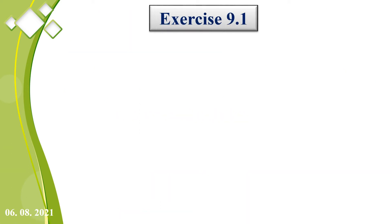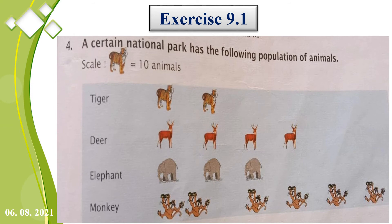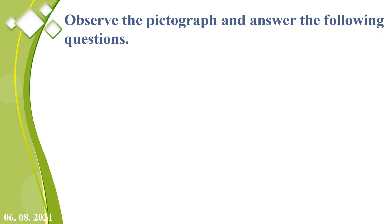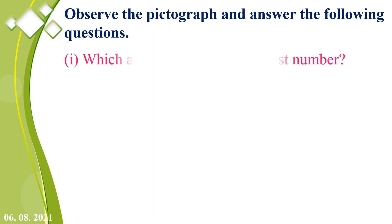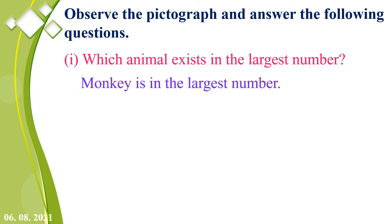Now, exercise 9.1, problem 4: a certain national park has the following population of animals. Scale: one picture represents 10 animals. Tiger has 2 pictures, deer has 4 pictures, elephant has 3 pictures, monkey has 6 pictures. First question: which animal is in the largest number? The answer is monkey, because 6 into 10 equals 60.